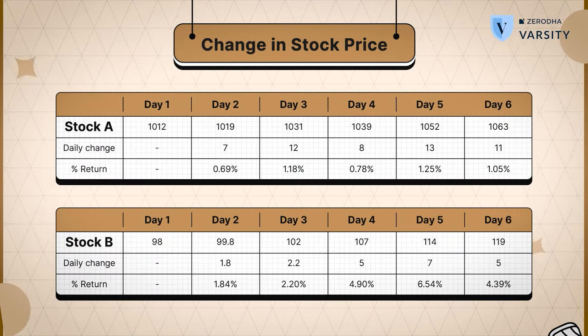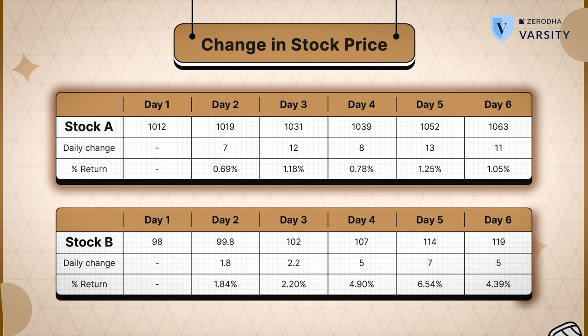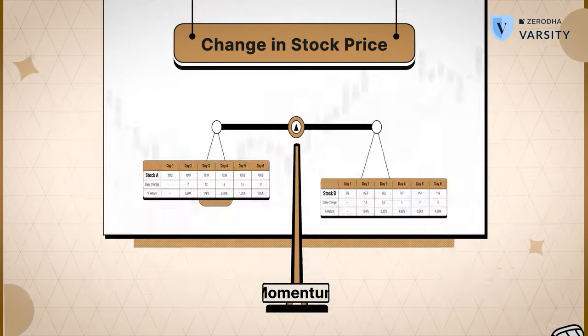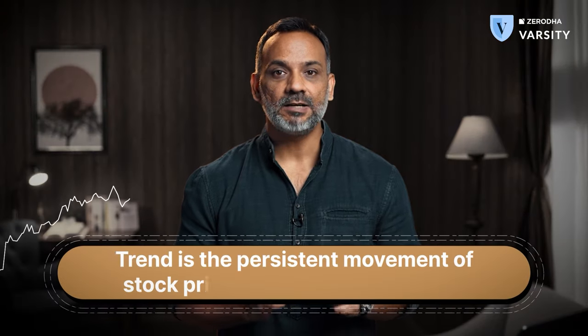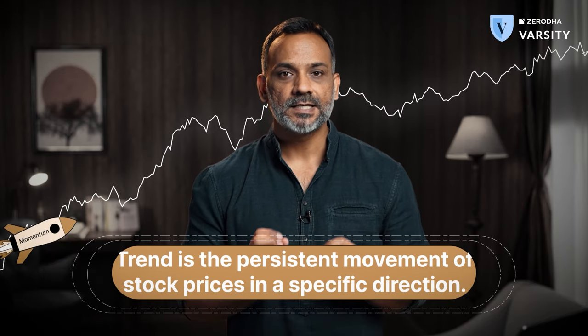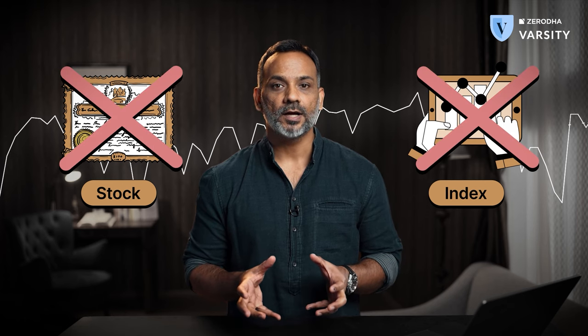Let's dig deeper and understand this better. What you are seeing is the daily change in stock returns for stock A and stock B. Both stocks have trended up. One key aspect that people miss out when talking about momentum is trend. Trend is the persistent movement of stock prices in a specific direction. Momentum is the speed at which this persistent movement happens. If a stock or index is exhibiting momentum in the absence of a trend, you may not want to include such a stock in your portfolio. Always check for trend when thinking about momentum strategies.